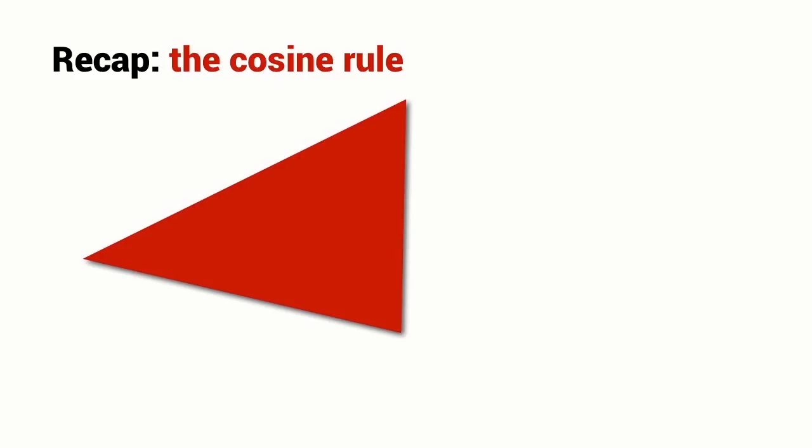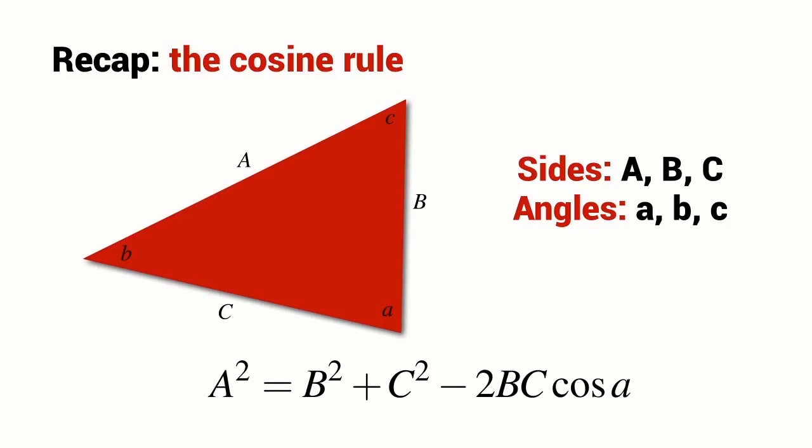We have an arbitrary triangle. We don't have to have any right angles in it. And we're going to label the length of this edge as A and the angle opposite that edge, we're going to label as little a. And we do the same for this edge and this angle and this edge and this angle. So all together, the sides are labeled capitals A, B and C and the angles are labeled little a, little b and little c. So the cosine rule is simply this relationship here. It's a bit like Pythagoras' theorem except for this extra term on the end with the cos A in it.